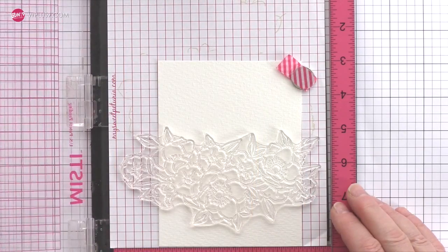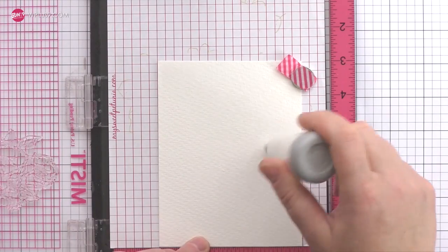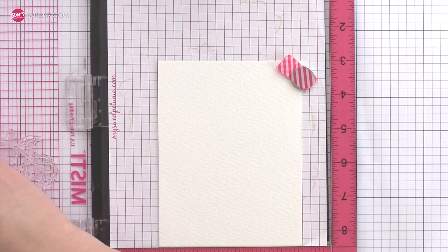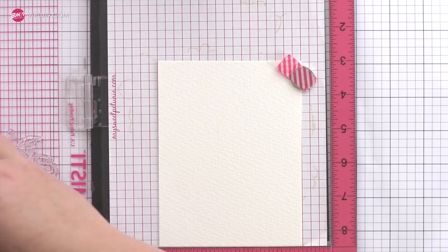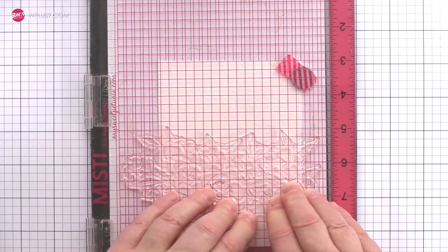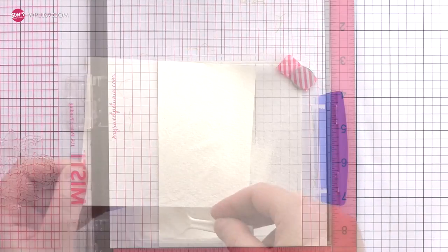I'm going to be white heat embossing the image on watercolor card so I have my piece of card in the MISTI and I'm treating the card with the EK Success Powder Tool. This will help to prevent the embossing powder sticking where you don't want it to. Then I'm stamping the image in a sticky embossing ink. I stamped it several times to ensure I got a good impression on the textured watercolor card.